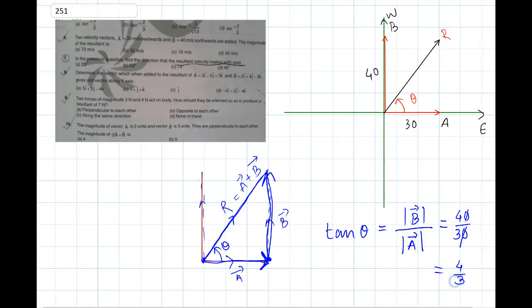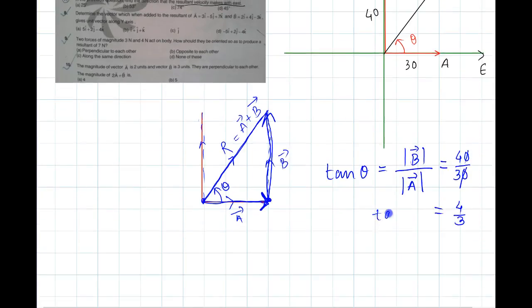Now how do I know which value of theta will give me tan theta equal to 4 by 3? You know the five standard angles in trigonometry—the values that you already know for 0, 30, 45, 60, and 90.